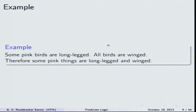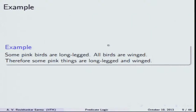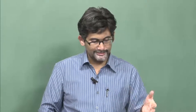For example, 'some pink birds are long-legged; all birds have wings; therefore there are some pink things that are long-legged and winged.' In propositional logic, the first sentence is P, the second is Q, and 'some things are long-legged and winged' is R. That will not serve our purpose. We need to talk about how sentences are related to each other, expressed by predicates, and go into the deeper structure of sentences to talk about the validity of such arguments.